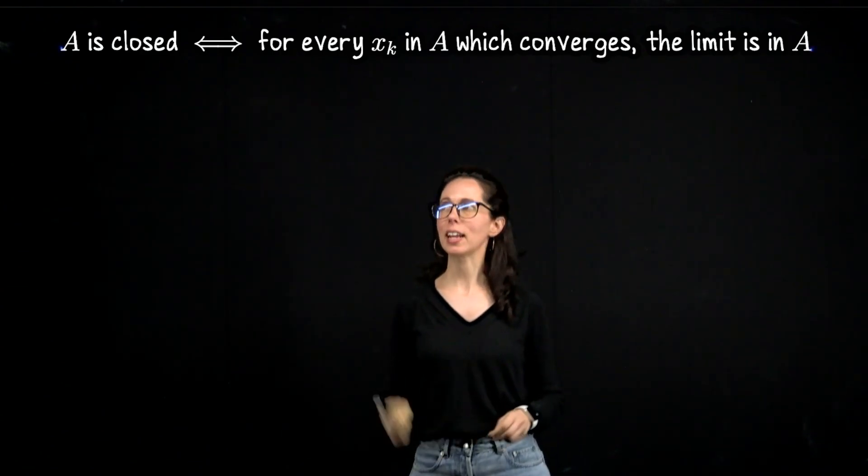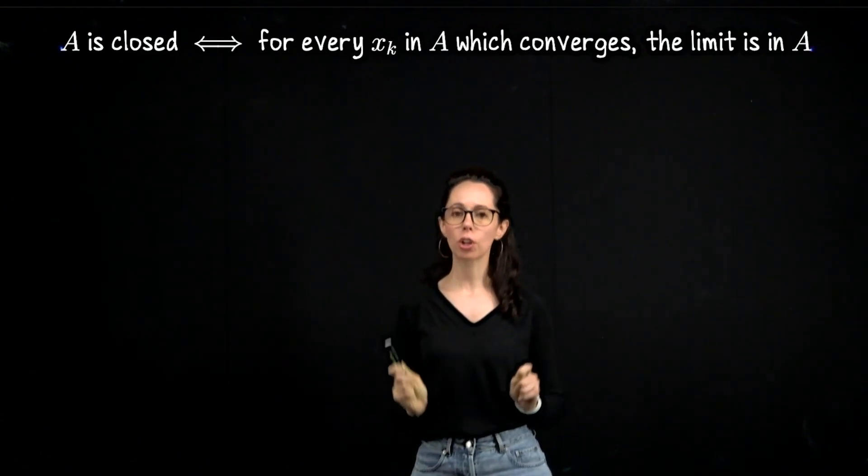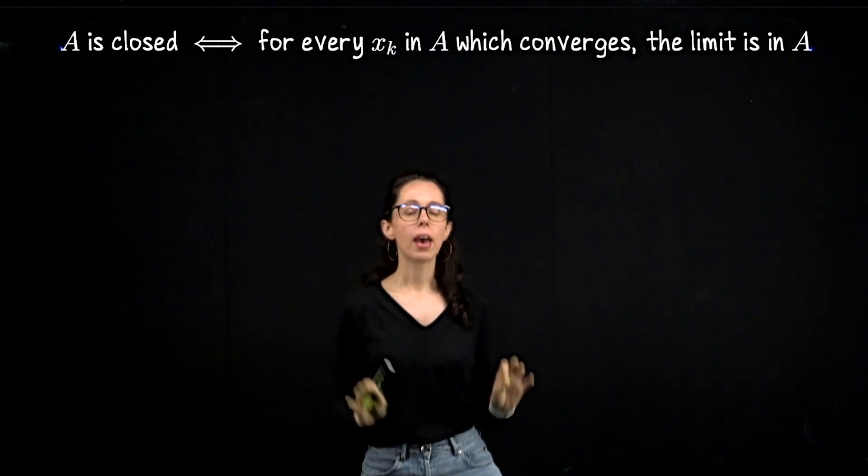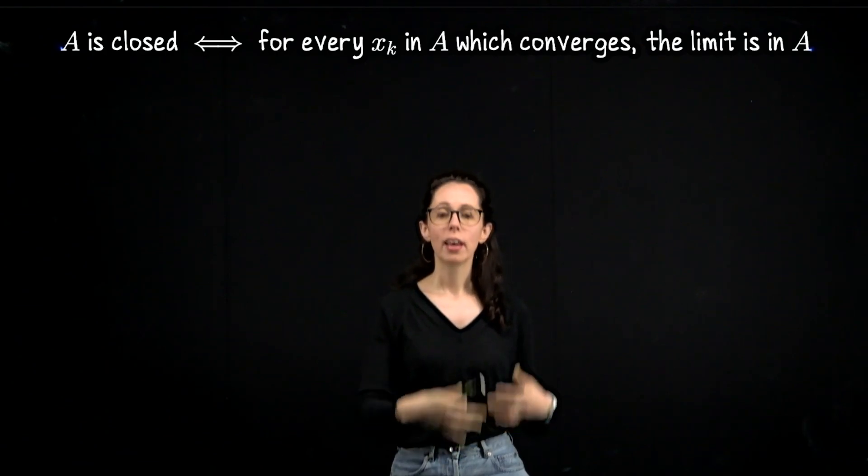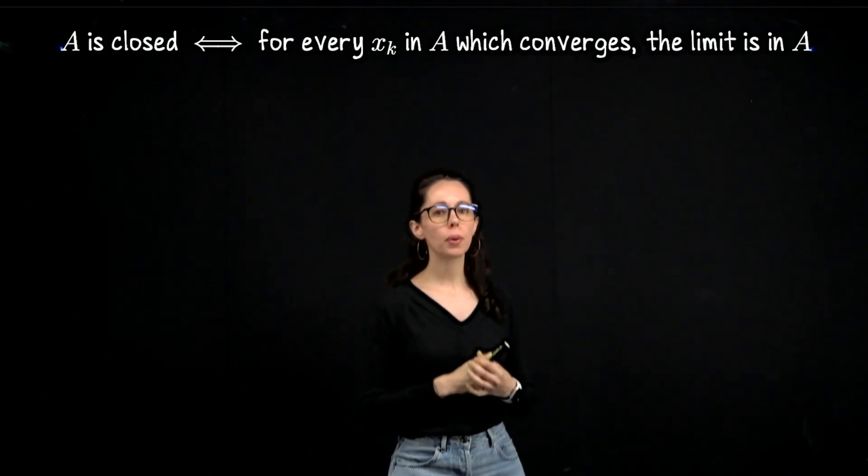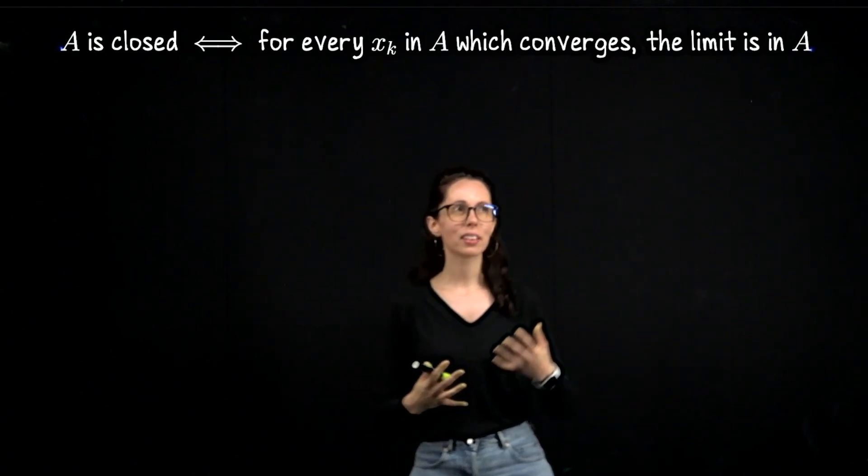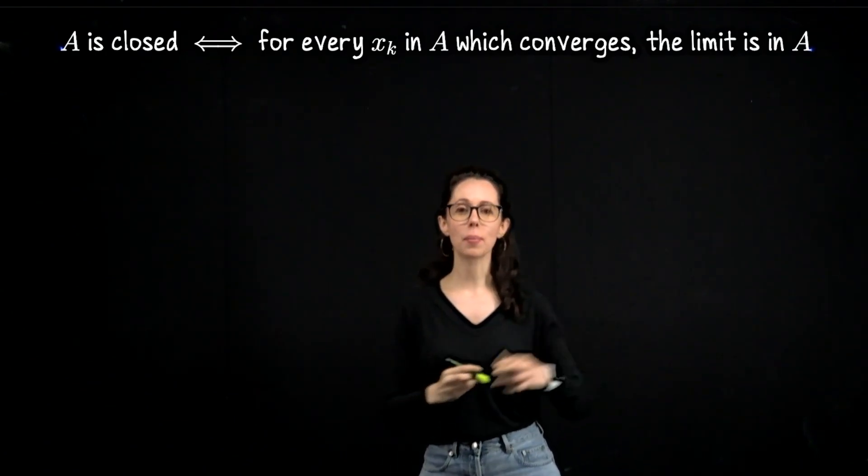Our first statement to prove is that a set A in a metric space is closed if and only if every sequence in A which converges, converges to a limit which also belongs to A.